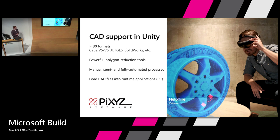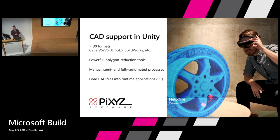CAD support is very important for a lot of people, and that's why we partner with a company called PiXYZ from France. With the power of PiXYZ we can support more than 30 CAD formats directly and natively in Unity — you can integrate CATIA files, JT files, and whatever you want — and have powerful tools to reduce polygons, calculate NURBs to polygons, and use them inside Unity. You can do this manually or script it with Python code for a fully automatic process.